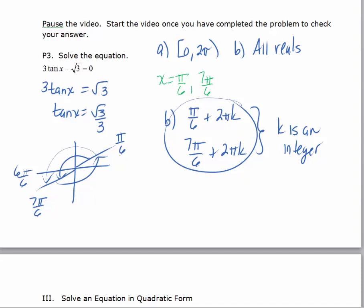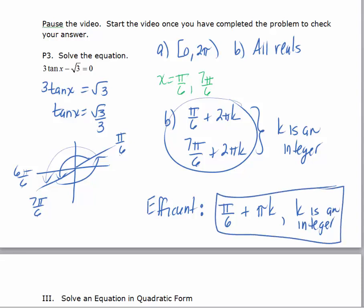So although these general solutions work, the π over 6 plus 2π k and the 7π over 6 plus 2π k, the most efficient way is that you're going to get solutions every π over 6 plus π k, where k is an integer. This is the correct and most efficient way.